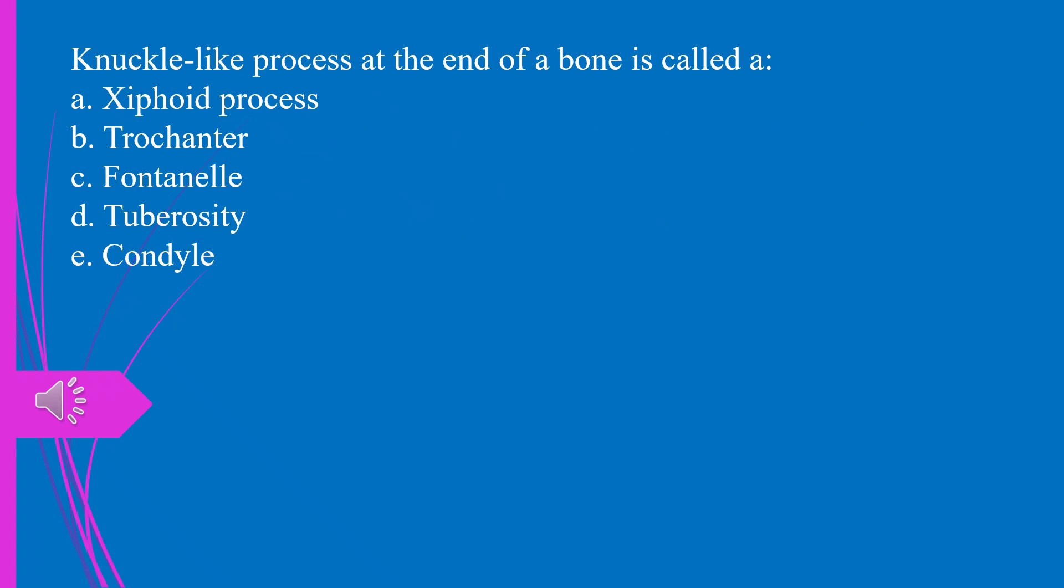The knuckle-like process at the end of a bone is called, A. Xiphoid process. B. Trochanter. C. Fontanelle. D. Tuberosity. E. Condyle. The answer is E. Condyle.